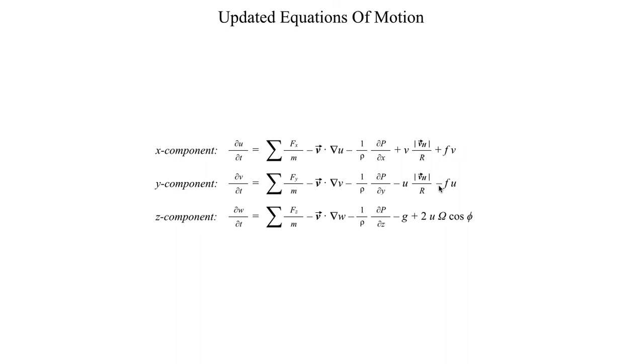And then this plus fv, that's the x component of the Coriolis force. This minus f times u, that's the y component of the Coriolis force. And then, again, this term, which you can usually neglect but for the sake of completeness I decided to include it, 2u times omega times cosine φ, that is the z component of the Coriolis force.